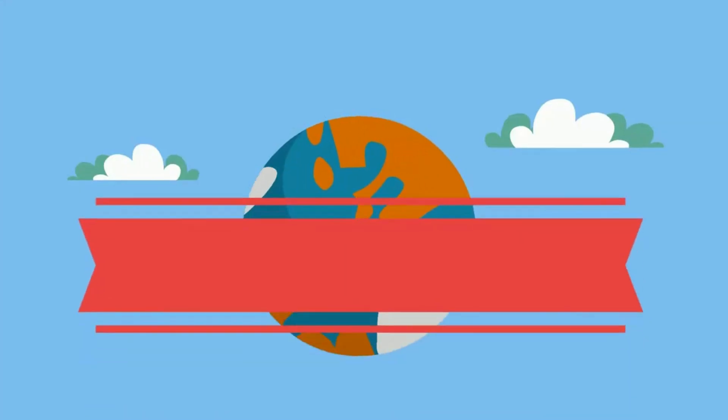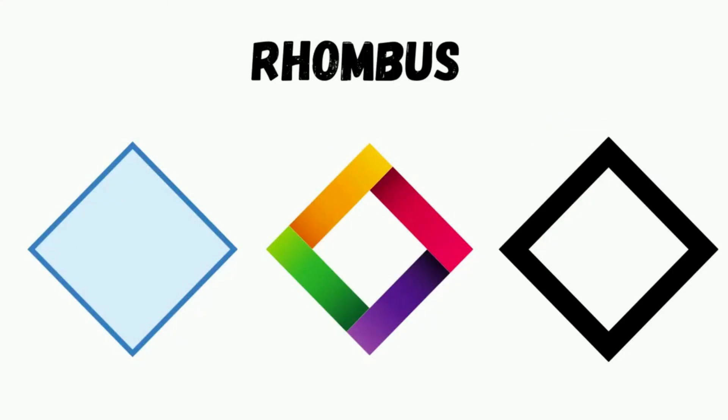Welcome to Moo Moo Math and Science and the properties of a rhombus. A rhombus is a plain 2D figure that has straight lines.